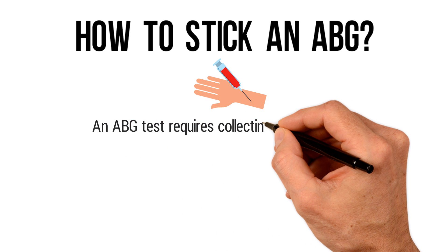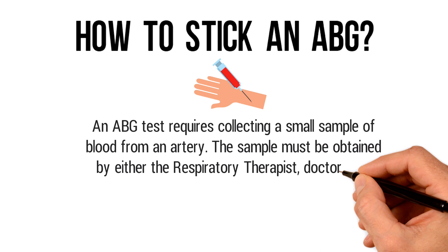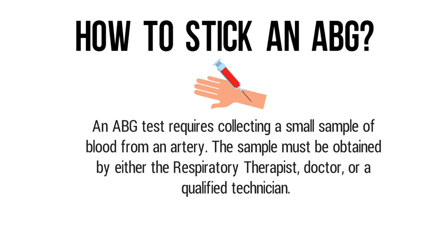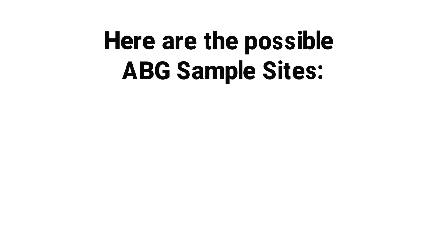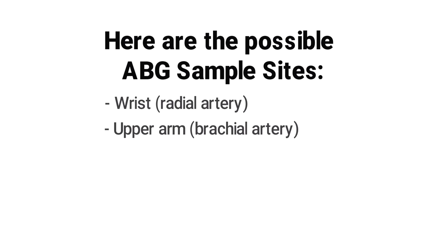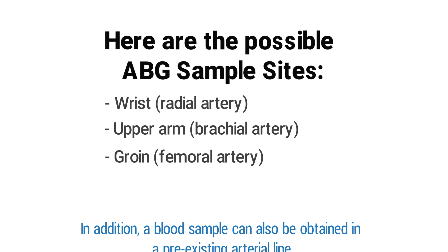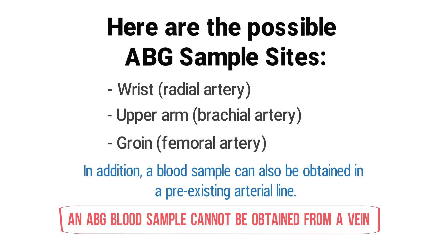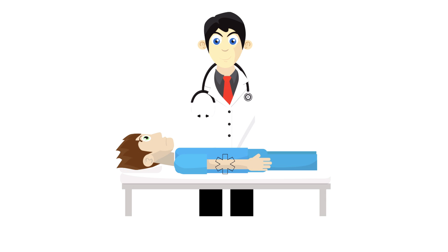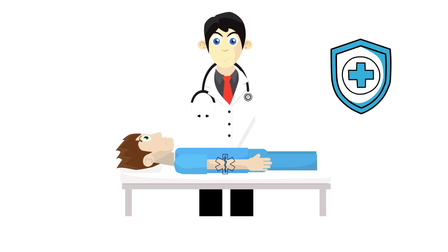An ABG test requires collecting a small sample of blood from an artery. The sample must be obtained by either the respiratory therapist, doctor, or qualified technician. Before sticking the patient, you must determine the best site for collecting the blood sample. The possible ABG sample sites are: the radial artery in the wrist, the brachial artery in the upper arm, and the femoral artery in the groin. A blood sample can also be obtained from a pre-existing arterial line. The radial artery is the preferred site because it has good collateral circulation, is superficial and easy to palpate, is not near any large veins, and the stick is relatively pain-free.